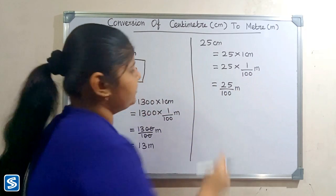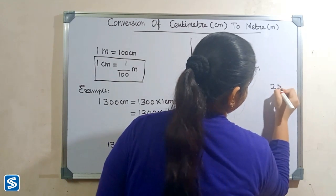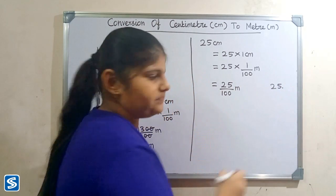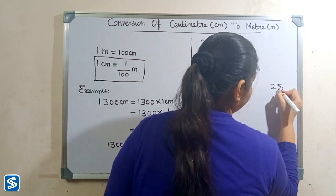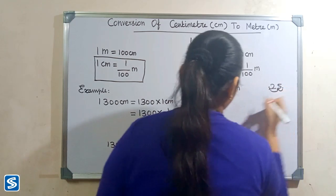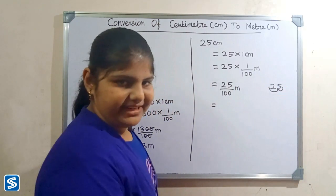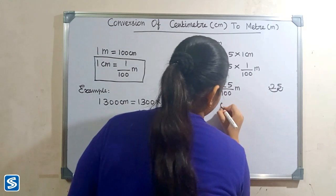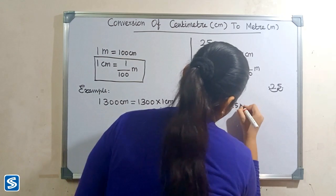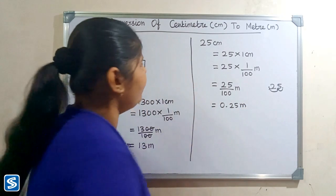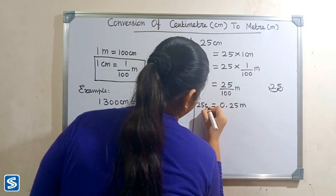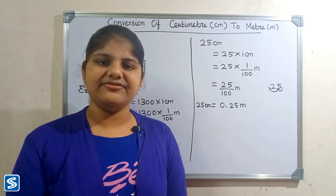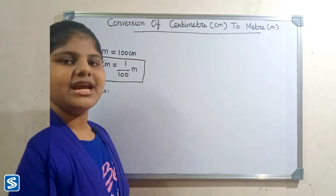The easy way to divide by hundred is to move the decimal point two places to the left. So when we divide twenty five by hundred meters, our answer will be zero point two five meters. So twenty five centimeters is equal to zero point two five meters.